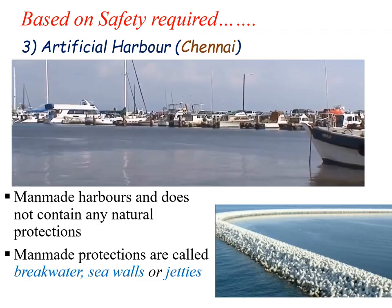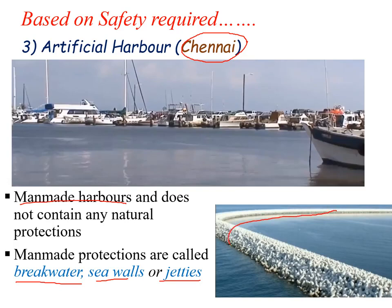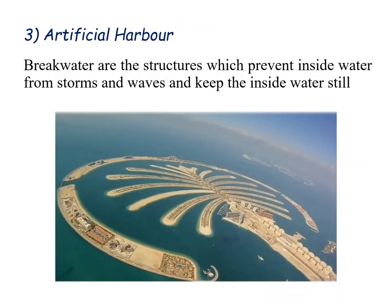Artificial harbor: where no scope for natural protection is available. Chennai is a developed artificial harbor. All constructions are man-made and there is no natural protection. Most of the time, man-made protections are in the form of breakwaters, sea walls, and jetties. The greater the length of the breakwater, the more protection it gives against wind. One example is the artificially constructed harbor in Dubai, where breakwaters surround the area all around.